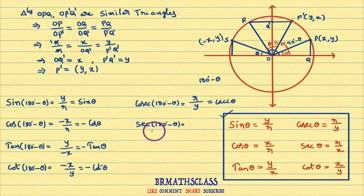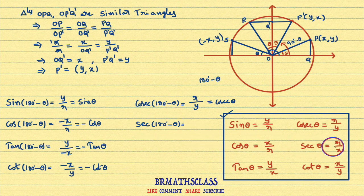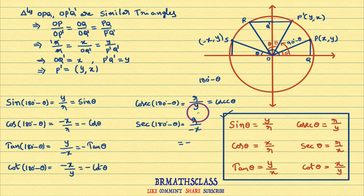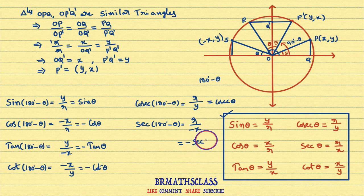Now, sec(180 degrees minus theta). Sec theta is initially defined as radius of the circle divided by x coordinate of the point. Here, radius divided by x coordinate of S, which is minus x, equals minus r by x. Since r by x is sec theta, sec(180 degrees minus theta) equals minus sec theta.